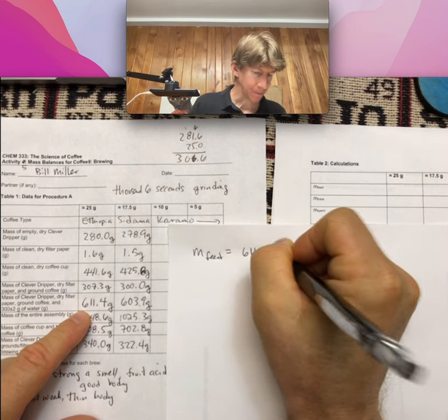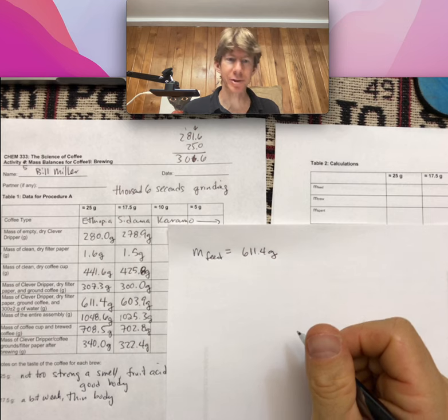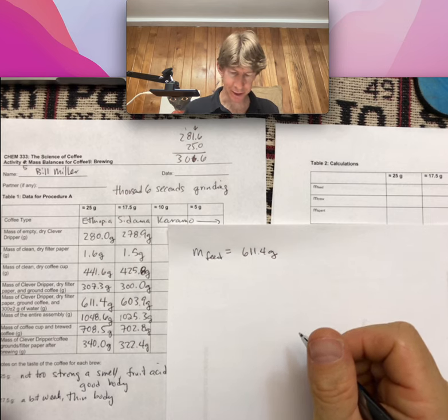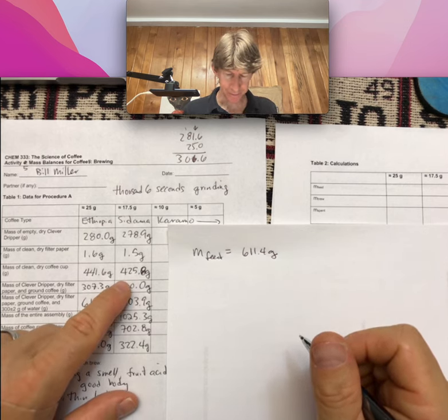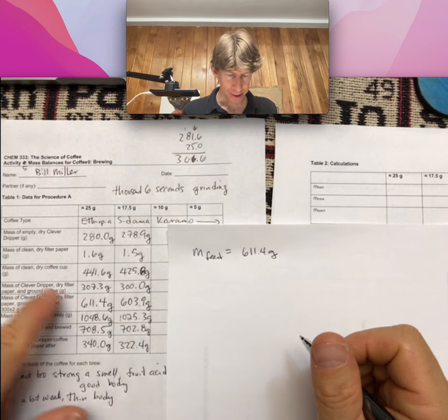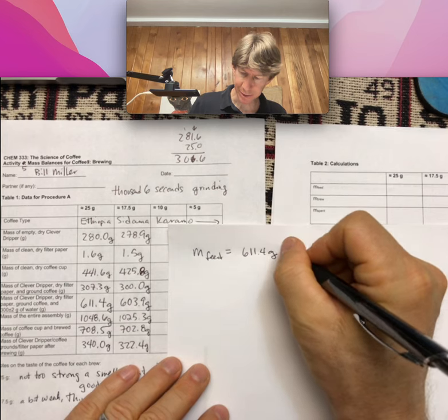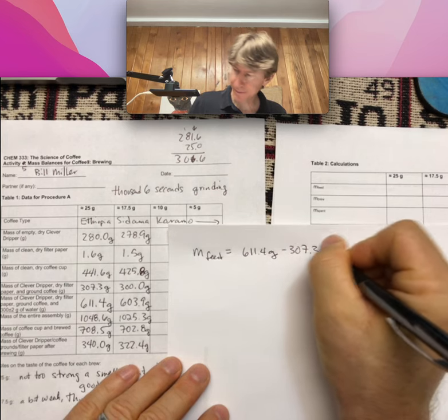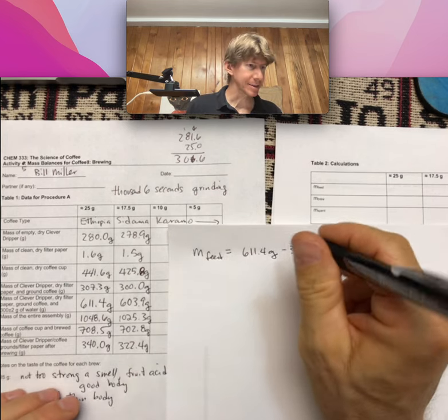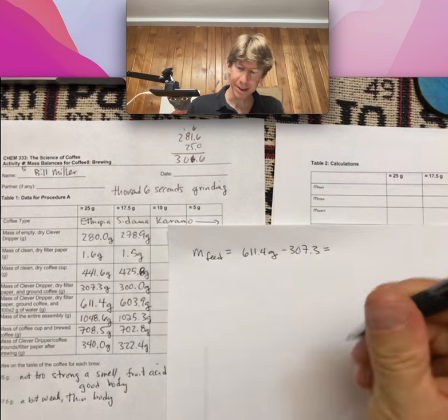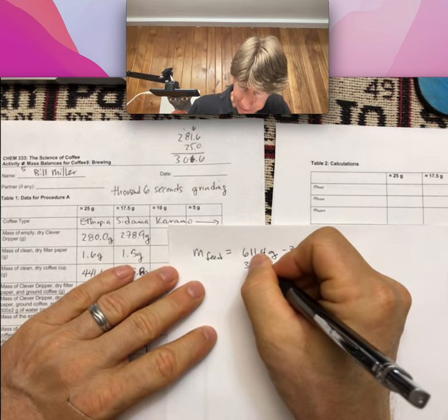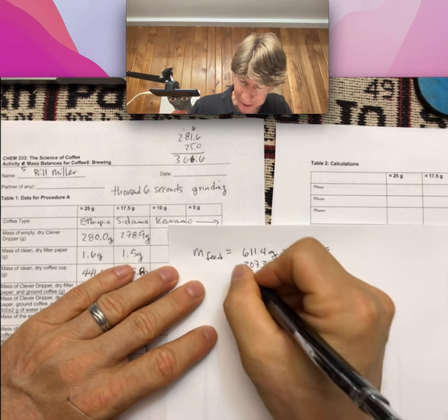Minus mass of clever dripper, dry filter paper, and ground coffee. So for the first one it's going to be minus 307.3, and I don't have my calculator right with me so let's stack them up.